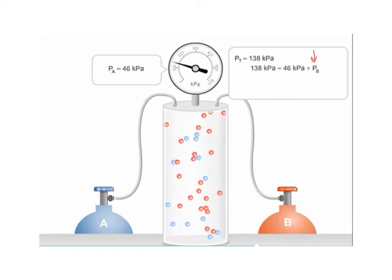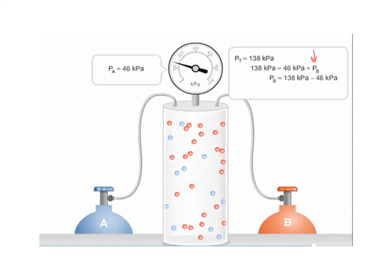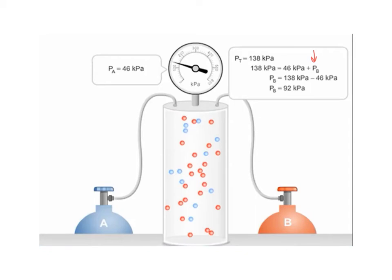To solve this, we take the total pressure equals 46 plus the partial pressure of B, take the difference of the total and partial pressure of A, and we see that the partial pressure of B is 92 kilopascals.